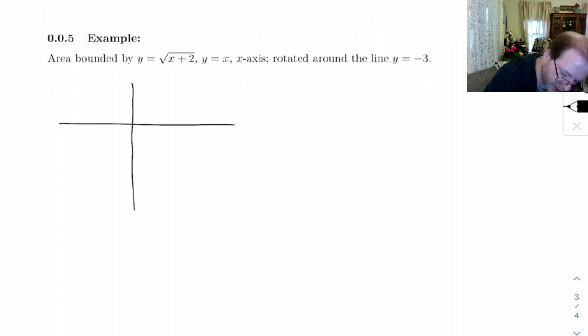Y equals square root of x plus 2. The square root of x is a half parabola. The plus 2 shifts it two units left. So 1, 2. So we've got this.